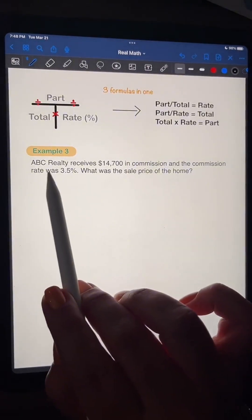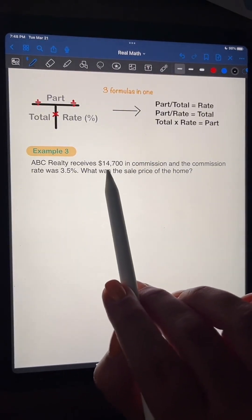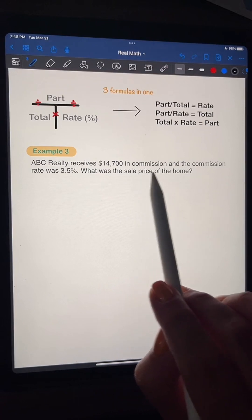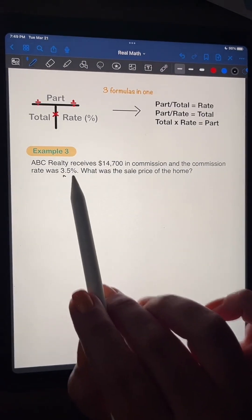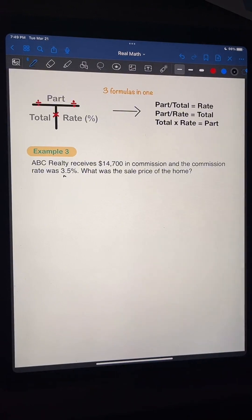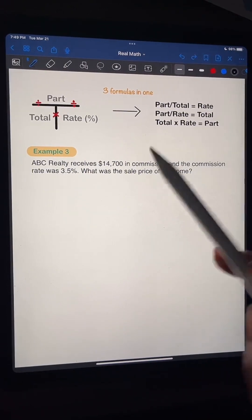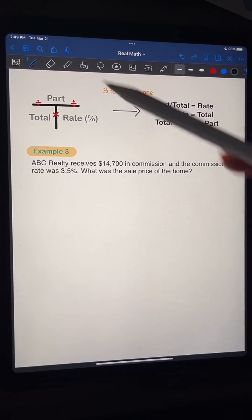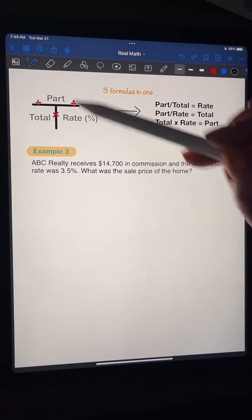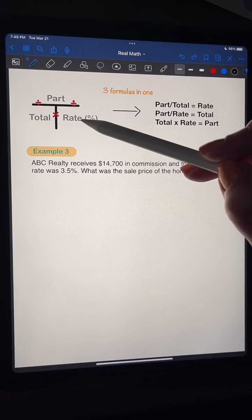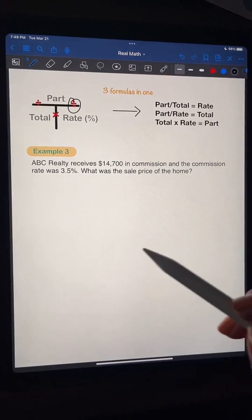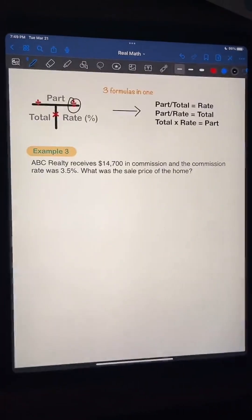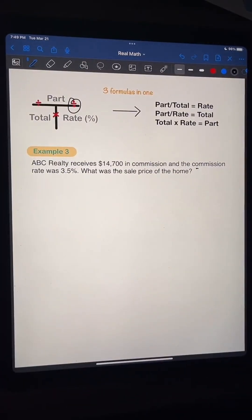So here we have ABC Realty receives $14,700 in commission, and the commission rate was 3.5%. What was the sale price of the home? All right. So we have the commission amount, which is the part, and we have the rate, which is here. Okay? So we're going to divide, and that's going to give us our total, how much the house sold for.